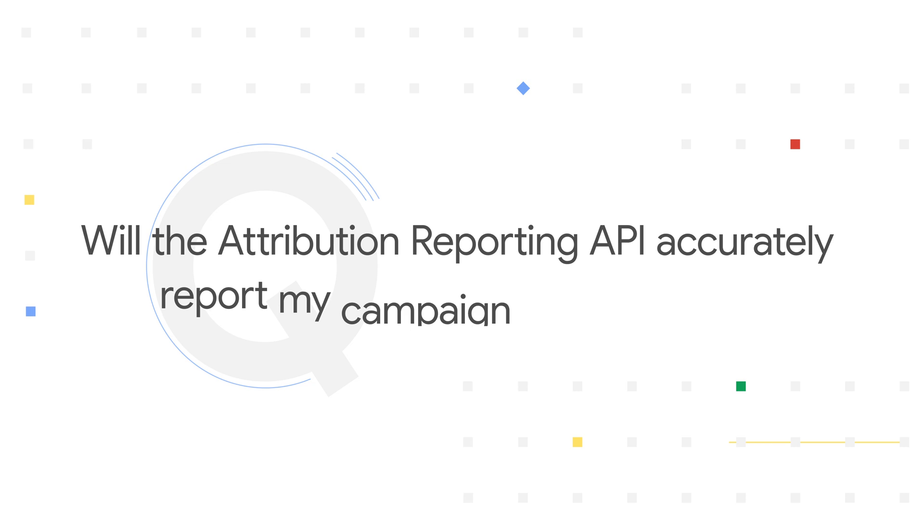Question 4: Will the Attribution Reporting API accurately report my campaign performance? It's important for the ecosystem that the new technologies we're building both protect user privacy and help you build thriving digital businesses. So we're committed to testing and evolving these proposals based on the learnings we gain along the way. And to help provide more complete measurement, ad tech providers who integrate with the Privacy Sandbox can use data from the Attribution Reporting API alongside other conversion data sources. The API is designed with protections in place to limit abuse. The Attribution Reporting API can detect and restrict large numbers of ad impressions that may be fraudulent, to help you get a more accurate picture of your results.